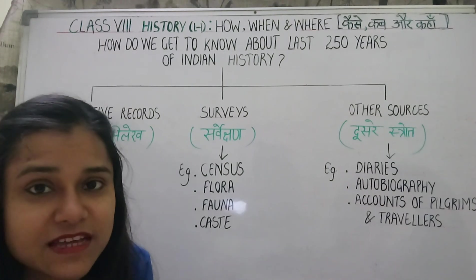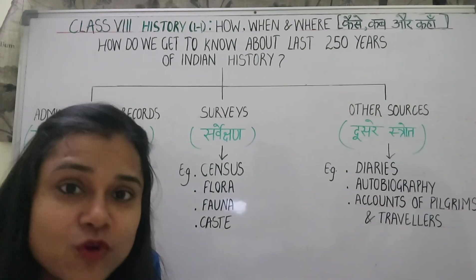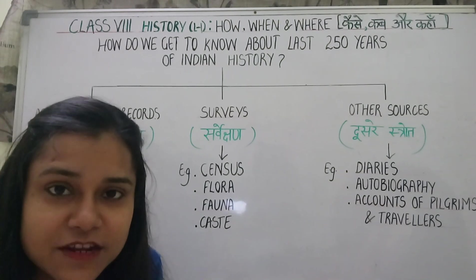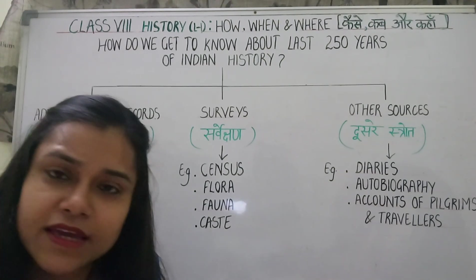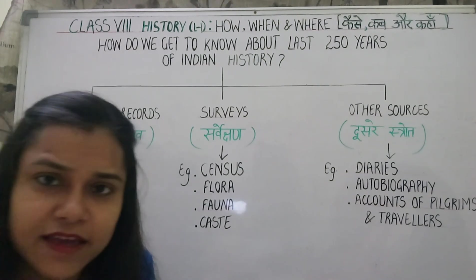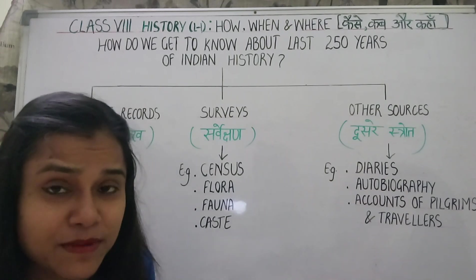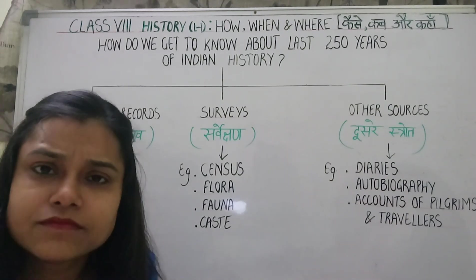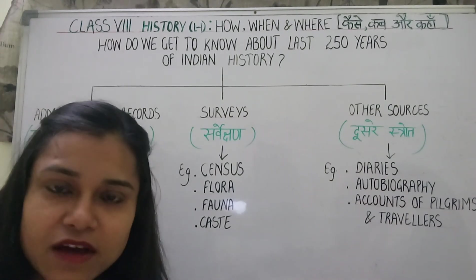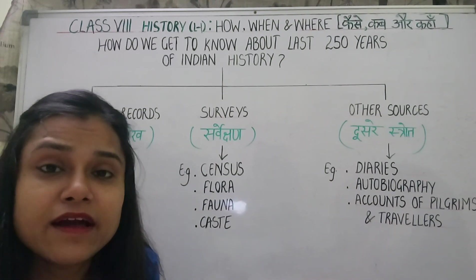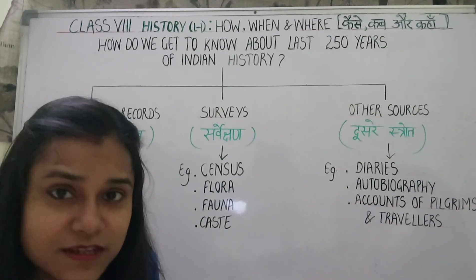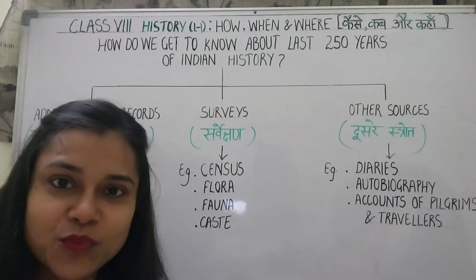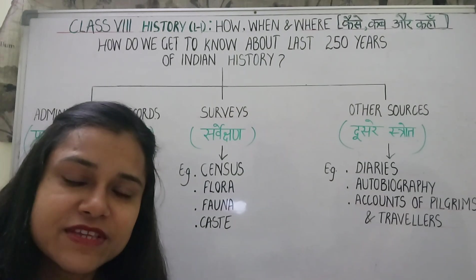In addition, there were forest surveys so that information about flora and fauna — plants and animals, the types of plants and varieties of flowers — could be collected. They also surveyed castes, religions, and languages, and these have been recorded in many surveys.